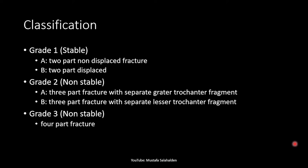Now I'll give you an overall view of the classification. It has three grades: grade one is a two-part fracture, grade two is three-part fractures, and grade three is four-part fractures. Grade one has two types — in type one A it is non-displaced, and in type one B it is displaced. Both fractures in grade one are considered stable in general.